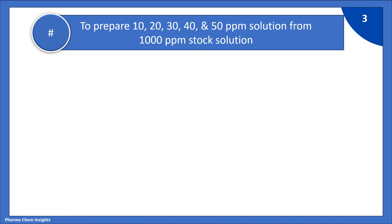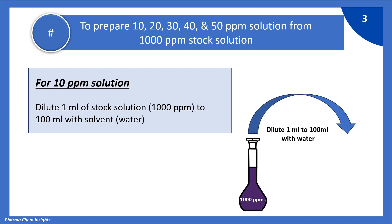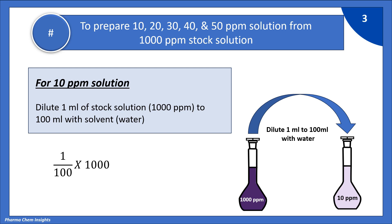Now let us see how to prepare 10, 20, 30, 40, and 50 ppm solution from 1000 ppm stock solution. For 10 ppm solution, dilute 1 ml of stock solution (1000 ppm) to 100 ml with water — it will give you 10 ppm solution. Calculation: 1 ml of stock diluted to 100 ml, multiplied by 1000, gives 10 ppm.